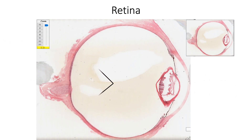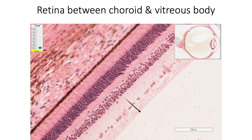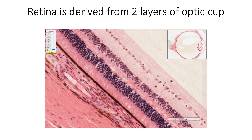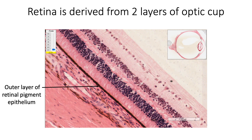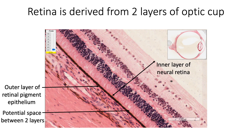Retina is the innermost coat of the eye, sandwiched between the choroid and vitreous body. It is derived from two layers of the optic cup. The outer layer of the optic cup forms the retinal pigment epithelium, and the inner layer forms the neural retina, contributing to the inner nine layers. Between these two layers, there is a potential space that forms the plane of retinal detachment.